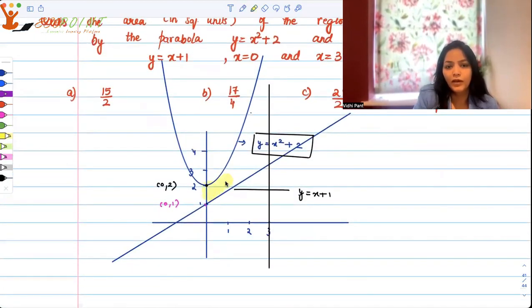So this is your parabola. This line, the y-axis, is the line where x is equal to 0. This vertical line is x equal to 3.